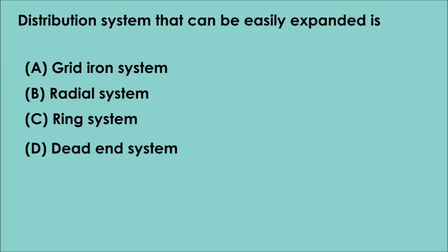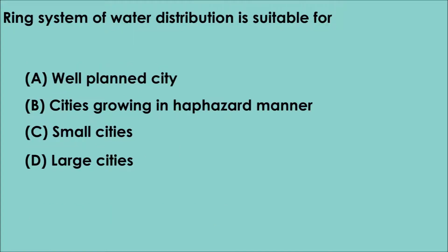Question 2. Distribution system that can be easily expanded is: A. Grid-iron system. B. Radial system. C. Ring system. D. Dead-end system. The correct answer is option D. Distribution system that can be easily expanded is the Dead-end system.